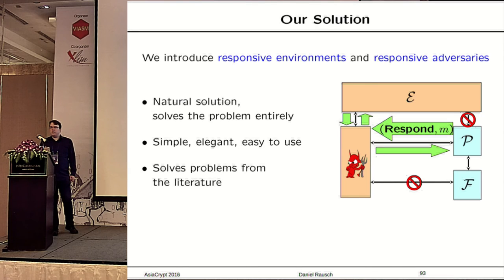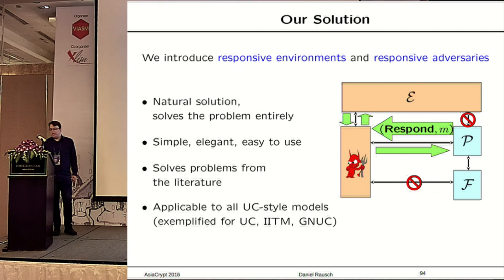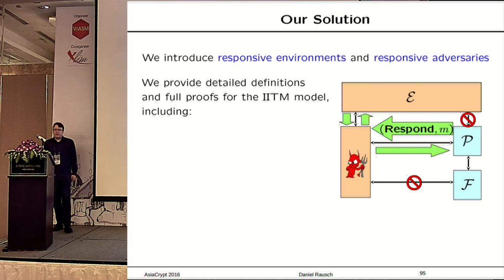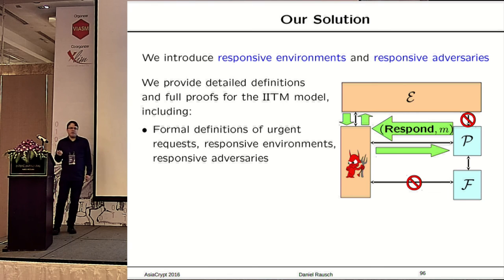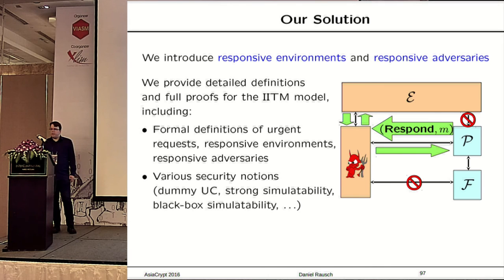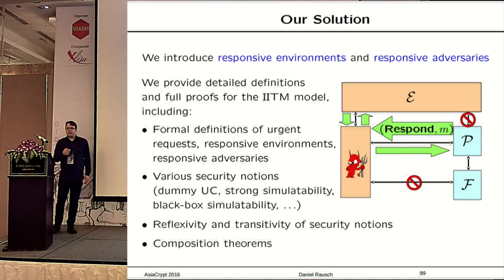Our framework is model-independent. We have exemplified this by applying it to the three major models: the UC model, the IITM model, and the GUC model. For the IITM model, we provide full details including formal definitions of urgent requests, responsive environments, and responsive adversaries. We define various security notions from the literature in this framework and show all of them remain equivalent — an important sanity check. All security notions are still reflexive and transitive. Most importantly, even though we reduced the power of environments and adversaries, they are still strong enough to prove the composition theorems of UC frameworks.